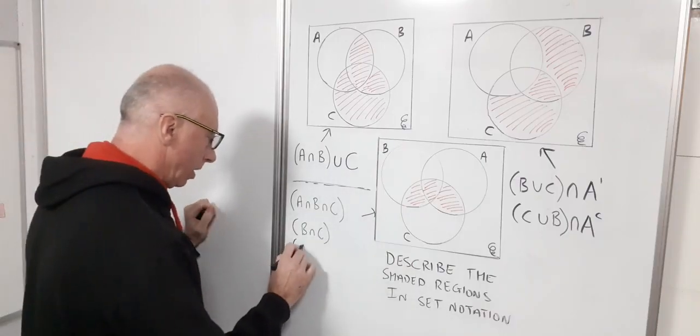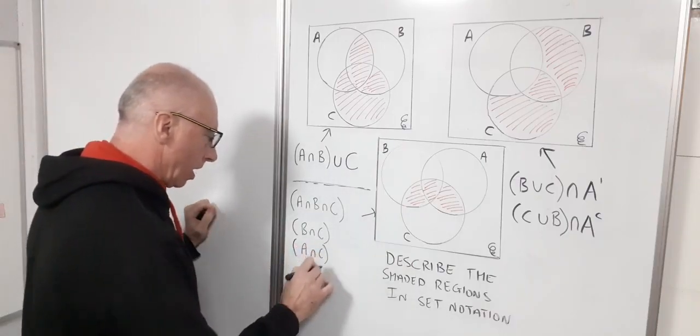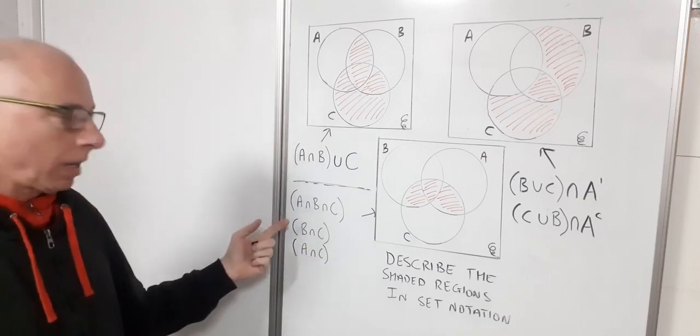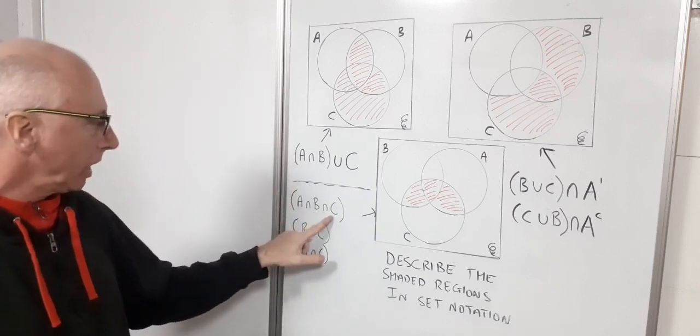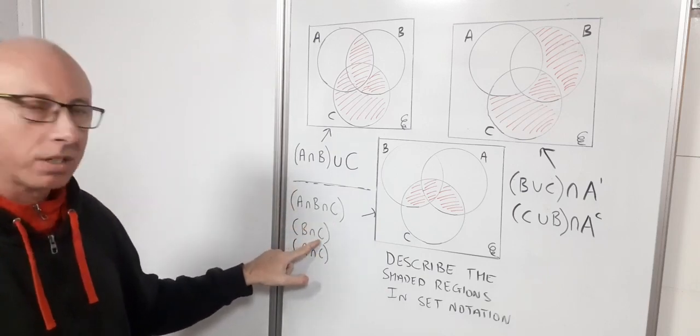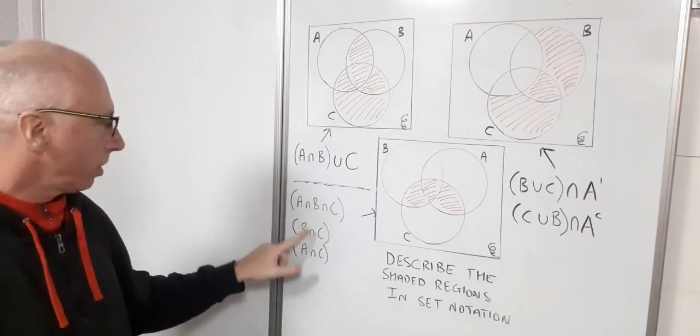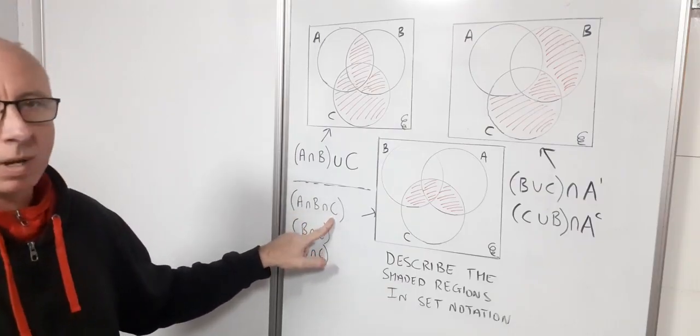I can't put them as a union together because I've got B intersection C here, and I've got A intersection C here and here as well. So I need to find another way of writing that.